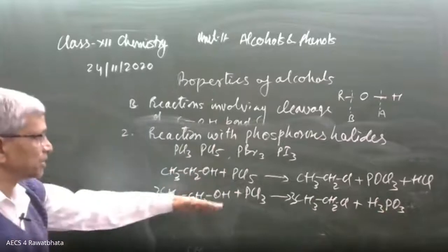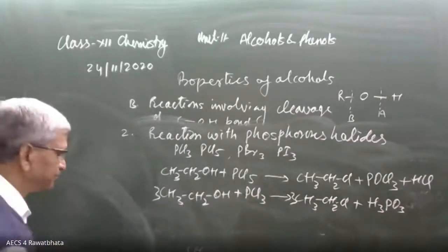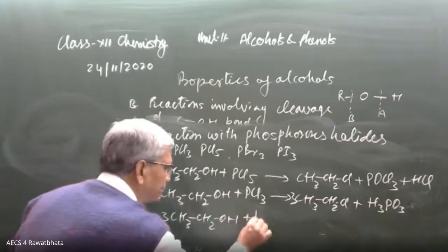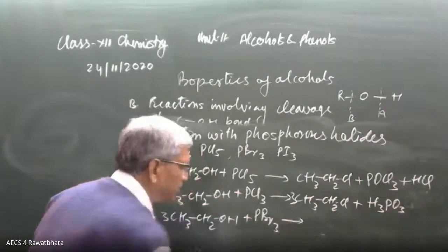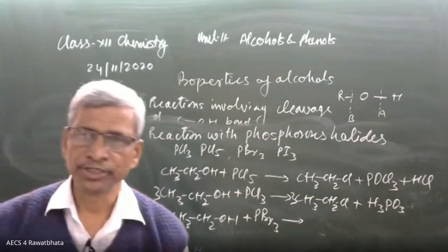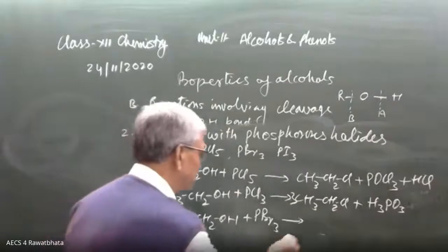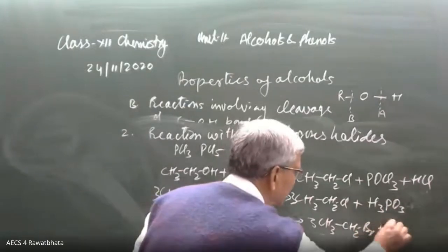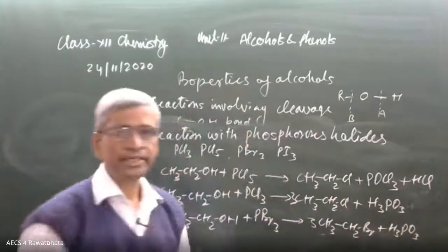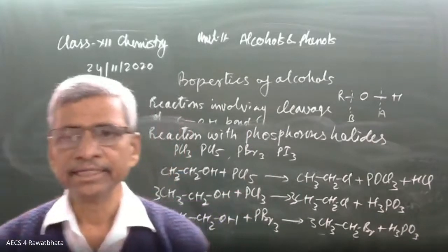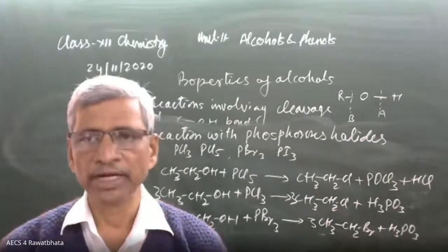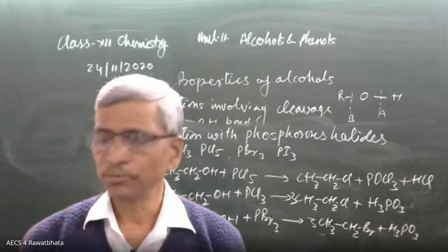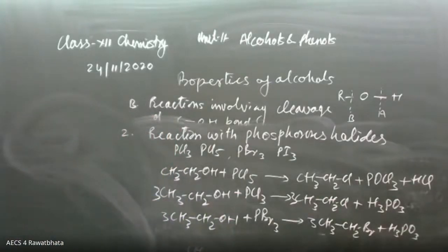Similarly, PBr₃ reacts: 3 CH₃CH₂OH + PBr₃ → 3 CH₃CH₂Br + H₃PO₃. This is the same pattern as PCl₃. This completes the second method of preparing haloalkanes from alcohols — the phosphorus halide method.